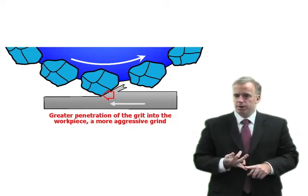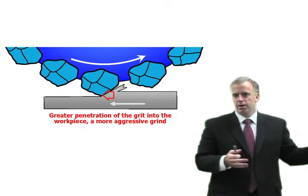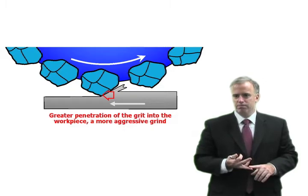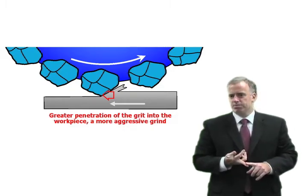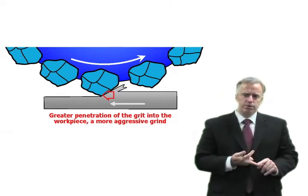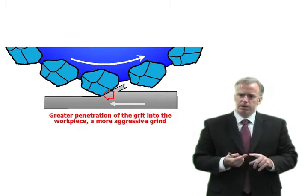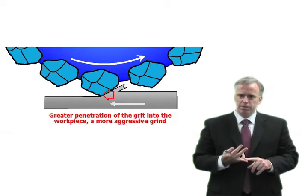Some people use material removal rate and they say higher material removal rate means more aggressive grinding, therefore you'll have a sharper wheel. It's only sort of true. Some people say it's about the wheel speed. Slow down your wheel speed, your wheel will act softer. Well, that's sort of true too. Some people use chip thickness. Some people use equivalent chip thickness. The parameter that I find most useful is the aggressiveness.